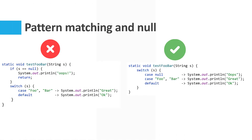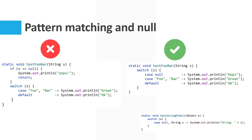The behavior of the switch when the value of the selector expression is null is always determined by its case labels. With a case null, the switch executes the code associated with that label. Without a case null, the switch throws a NullPointerException, just as before. We may wish to handle null in the same way as another case label — for example, in this code, 'case null, String s' would match both the null value and all String values.